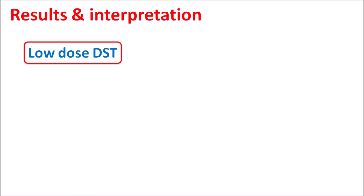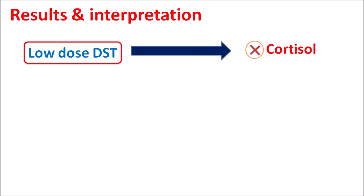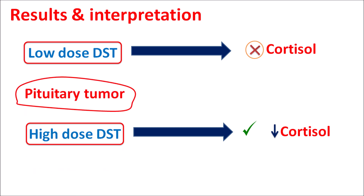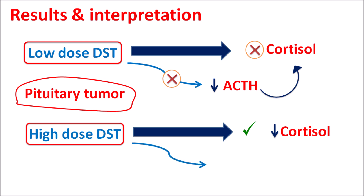Now let us see the results and interpretation. If the low dose dexamethasone suppression test shows no suppression of cortisol levels, but at high dose it shows suppression of cortisol levels, we can identify that this is because of pituitary tumors. In a pituitary tumor, at low dose, ACTH is not inhibited so cortisol levels are not affected; but at high dose, ACTH secretion is inhibited by negative feedback, so cortisol levels are also reduced. This pattern can differentiate pituitary tumors from adrenal tumors.